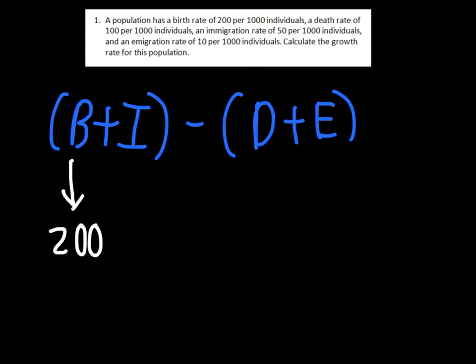And then it says a death rate of 100 per 1,000 individuals. So we'll record that one down. Death rate is 100. And then we come back up here to our problem, an immigration rate of 50 per 1,000. So immigration goes over here. And then the final one is our emigration, which is actually very low. The emigration rate is only 10 per 1,000 individuals. So that one goes down under here.